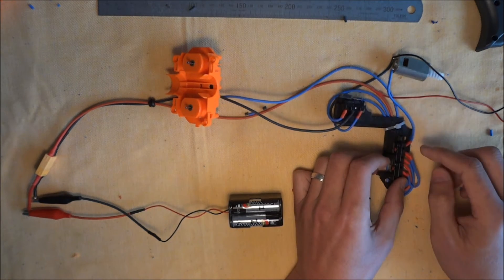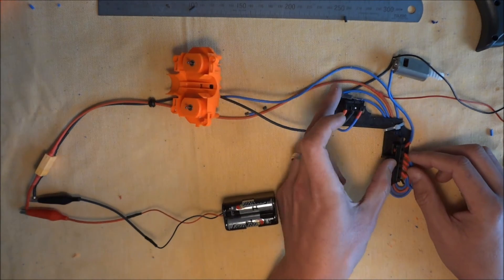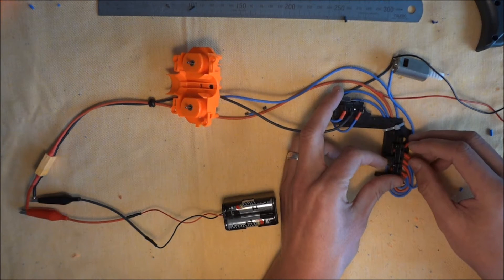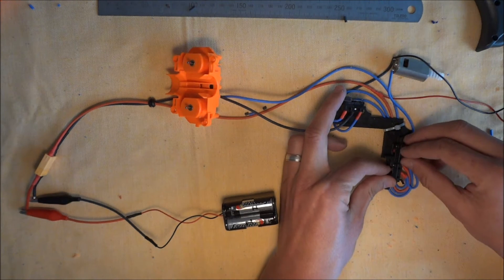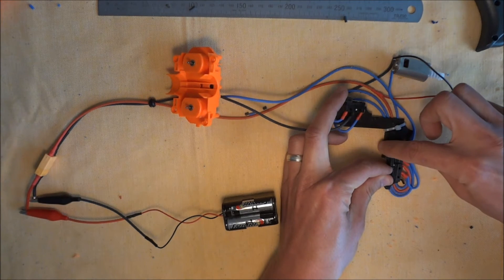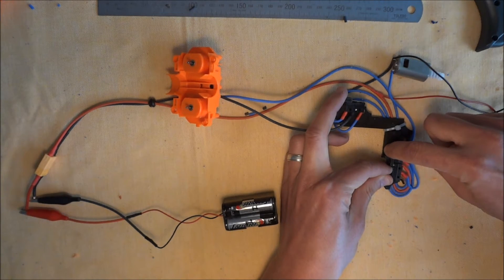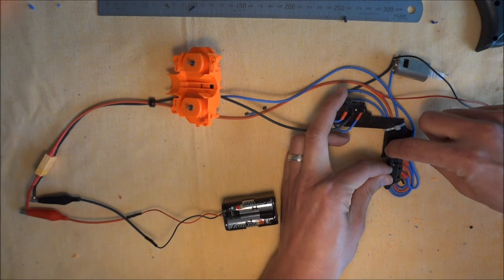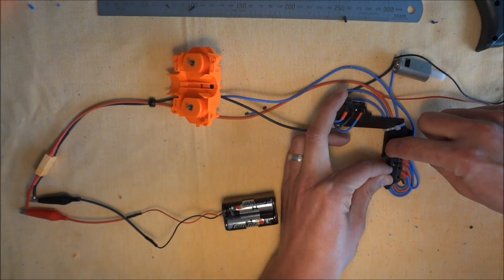In a normal situation, you've got the pusher retracted, so that switch is made. So now you would start revving your flywheels, then you would press the firing trigger, and you'll notice the pusher will start spinning to activate the pusher to start firing the darts.